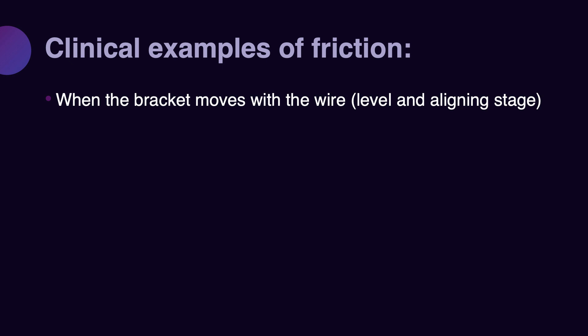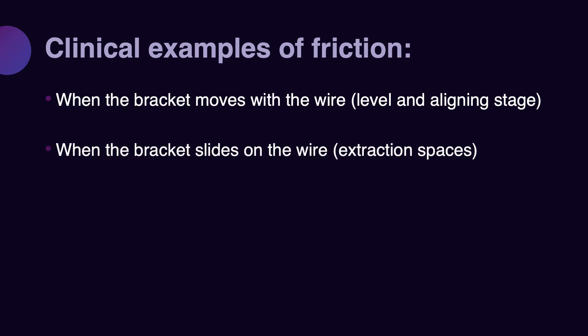Two conditions exist. One condition is when the bracket moves with the wire — there is no power chain, spring, or any other forces to slide the bracket on top of the wire; the wire and bracket simply move together. In the second condition, the bracket slides on top of the wire, for example when you are closing extraction space and retracting the anterior teeth. Both situations need to be studied in much more detail.